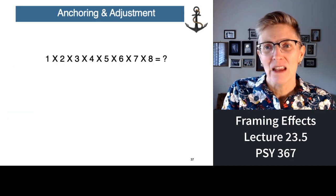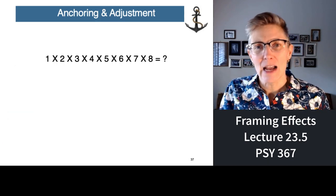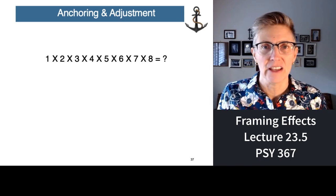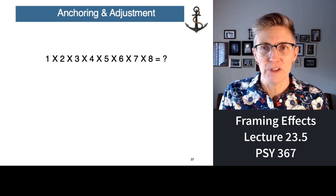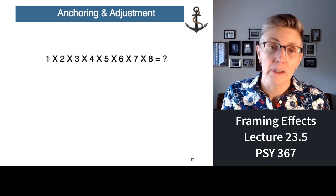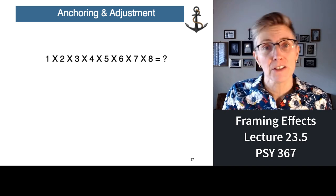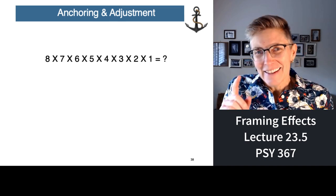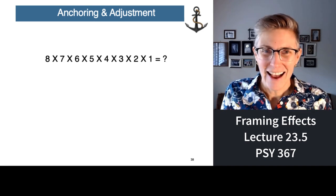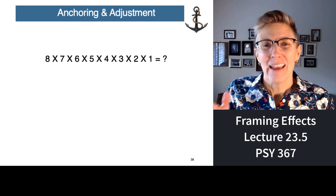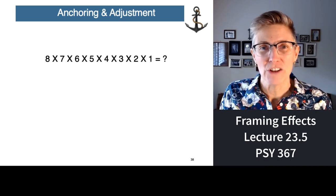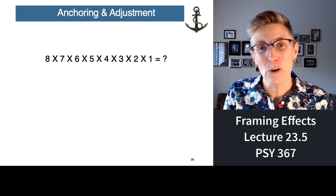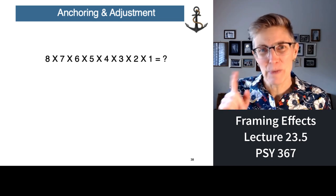Here's another example. Look at this equation quickly and come up with your first guess — don't work it out, just give a feeling for how much you think it adds up to. You're probably thinking 1 times 2 is 2, 2 times 3 is 6, 4 times 6 is 24 — maybe 250? In an experiment Kahneman and Tversky ran, half the subjects got that equation with the smaller numbers first, and the other half got it with the bigger numbers first.